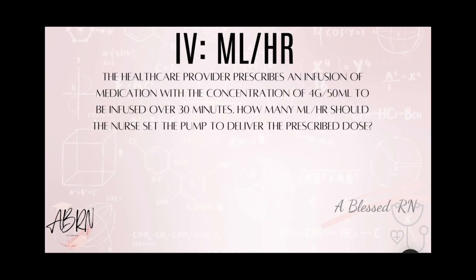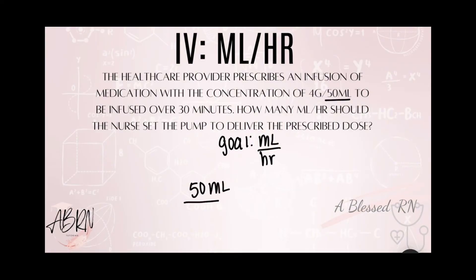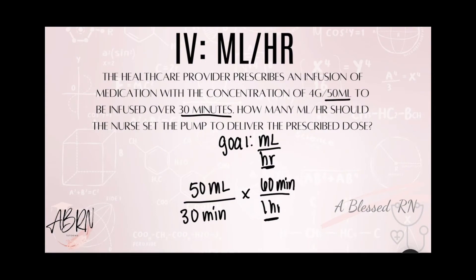Let's look at a milliliter per hour problem. A healthcare provider prescribes an infusion of medication with a concentration of 4 grams per 50 milliliters to be infused over 30 minutes. How many milliliters per hour should the nurse set the pump to deliver? Our goal is milliliters per hour — milliliters on top, hour on the bottom. We have volume of 50 milliliters over time of 30 minutes. Since minutes is at the bottom, I use the conversion 1 hour equals 60 minutes, putting 60 minutes over 1 hour so minutes cancel. Multiply across the top, multiply across the bottom, divide, and we get 100 milliliters per hour.